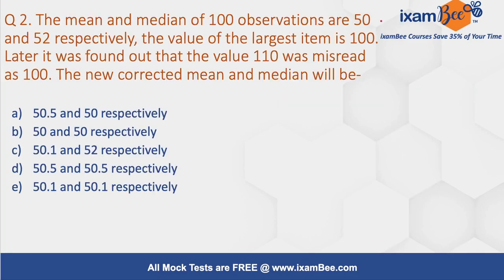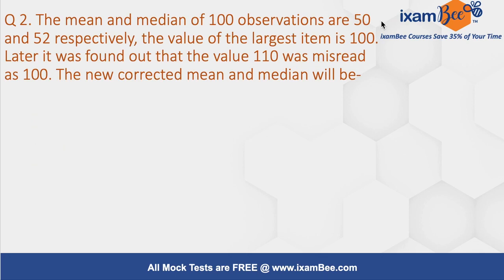Question 2: The mean and median for 100 observations is 50 and 52 respectively. The value for the largest item is 100. Later, it was found that the value 110 was misread as 100. The new corrected mean and median will be what? First, let's note the information we have: mean is 50, median is 52, and number of observations n is 100.